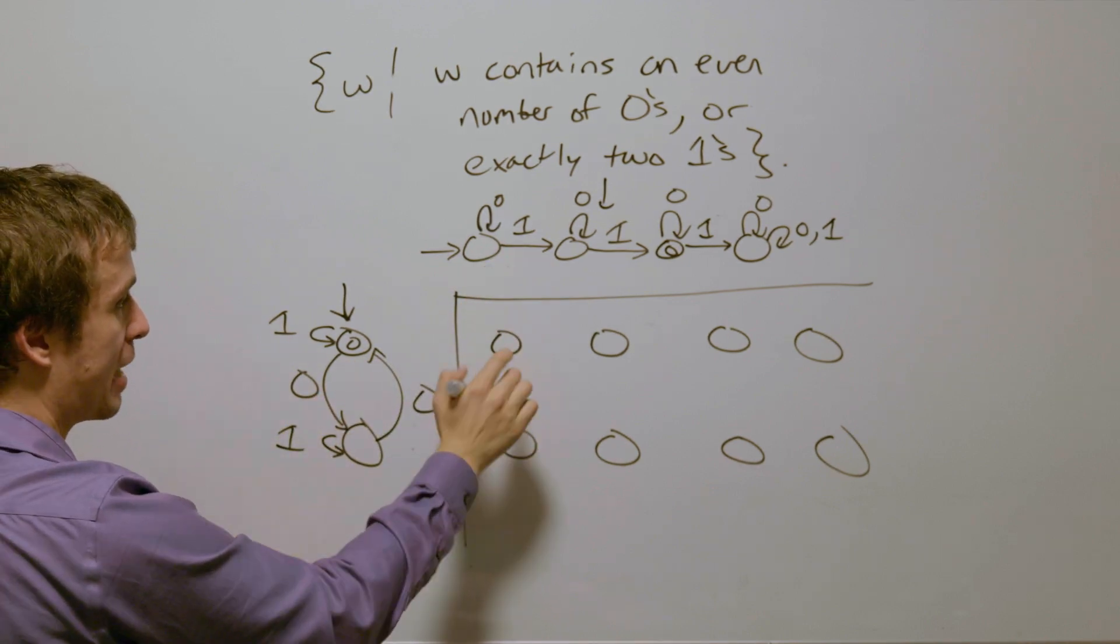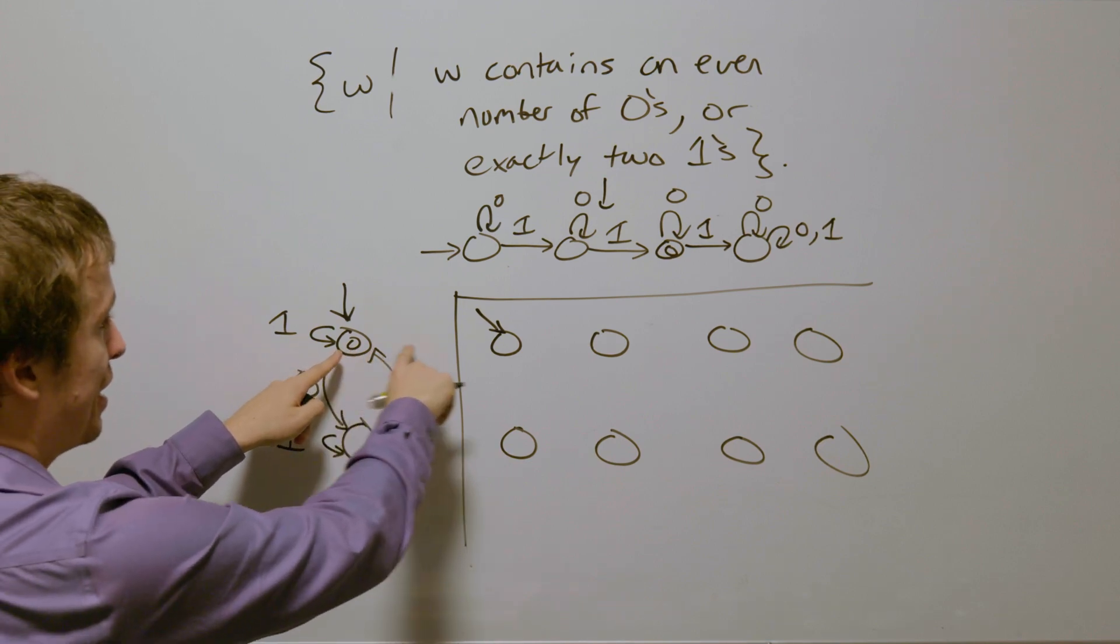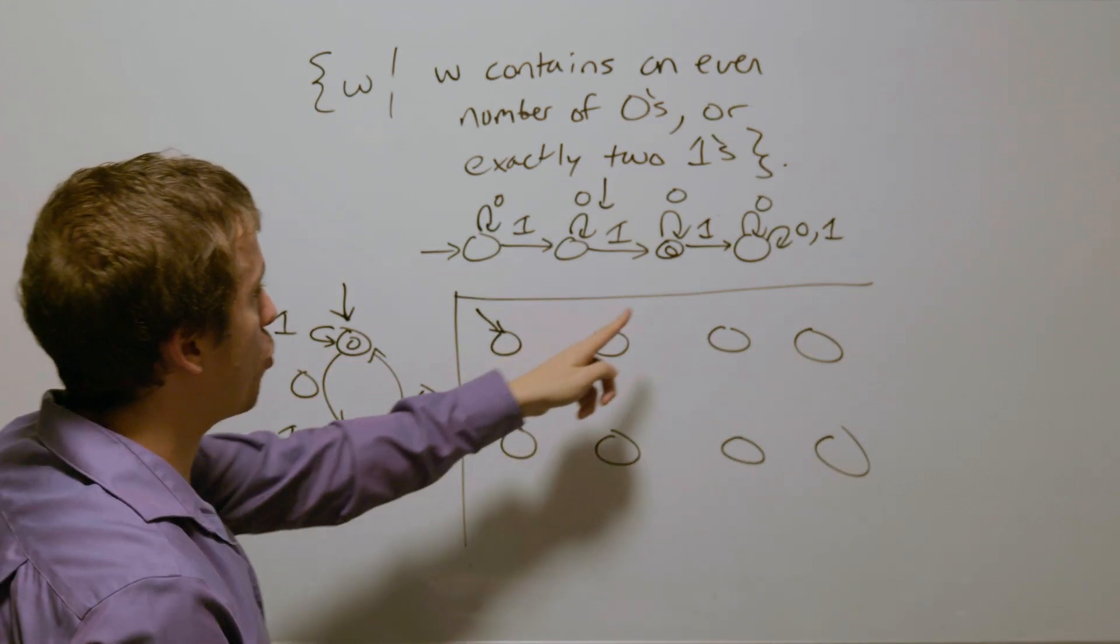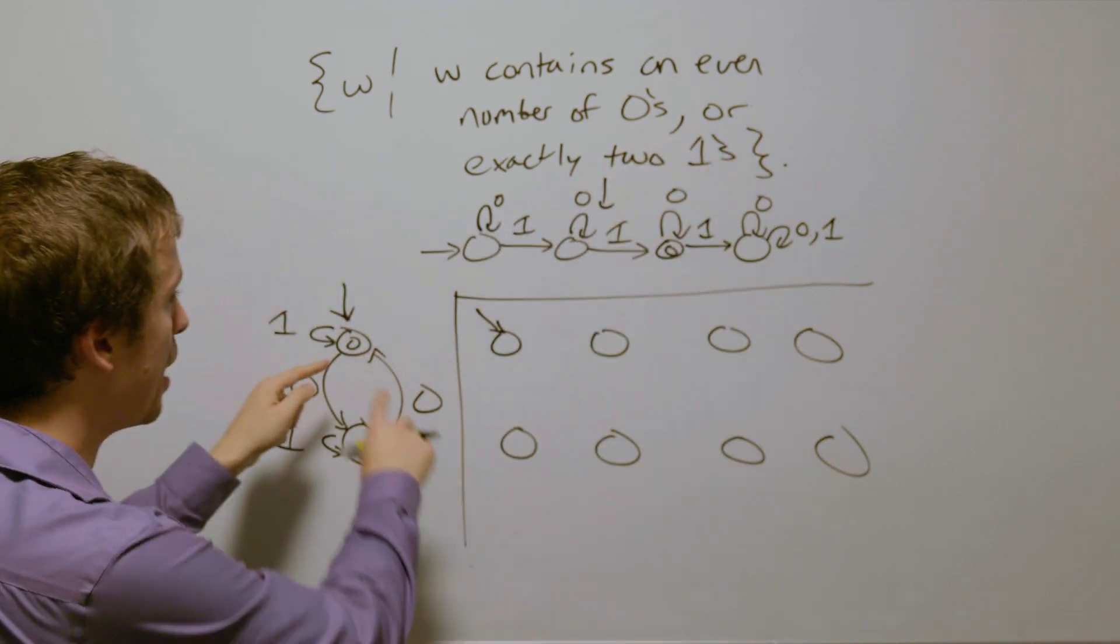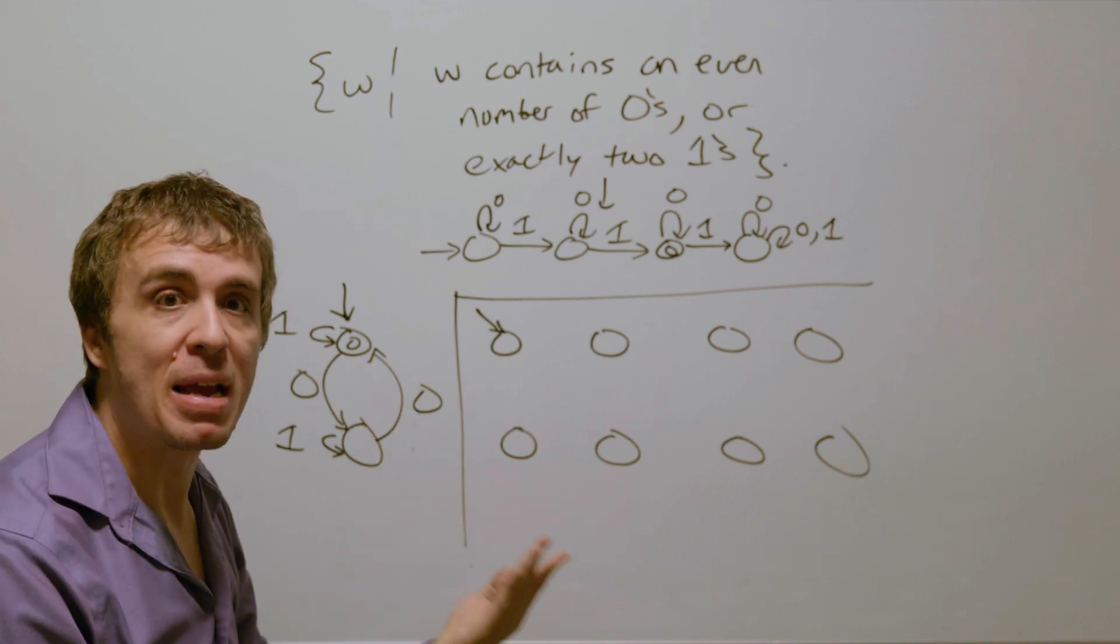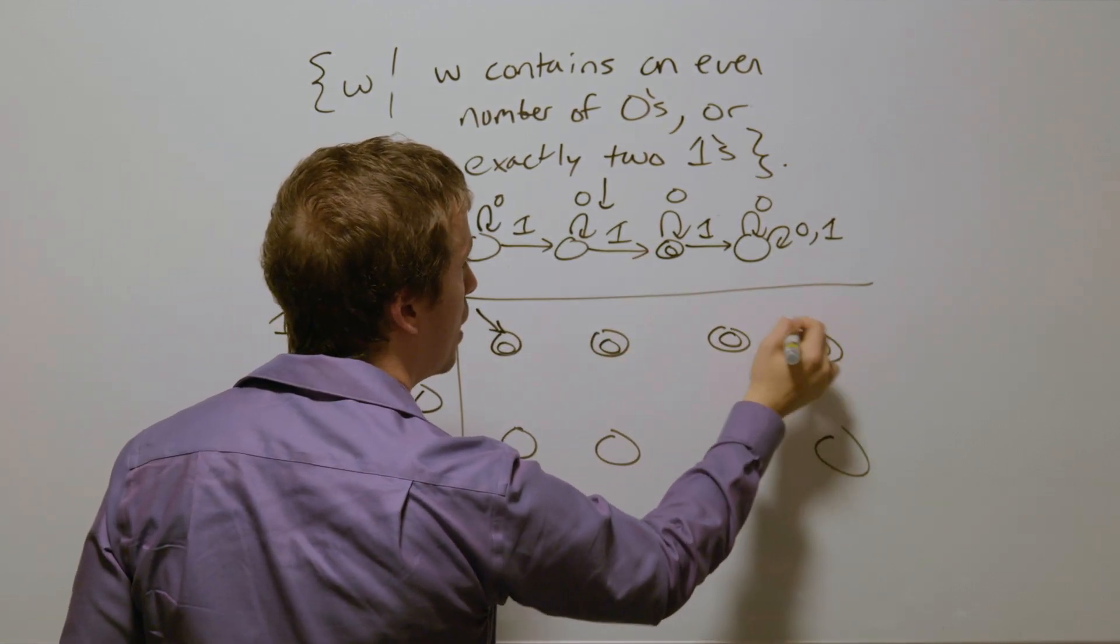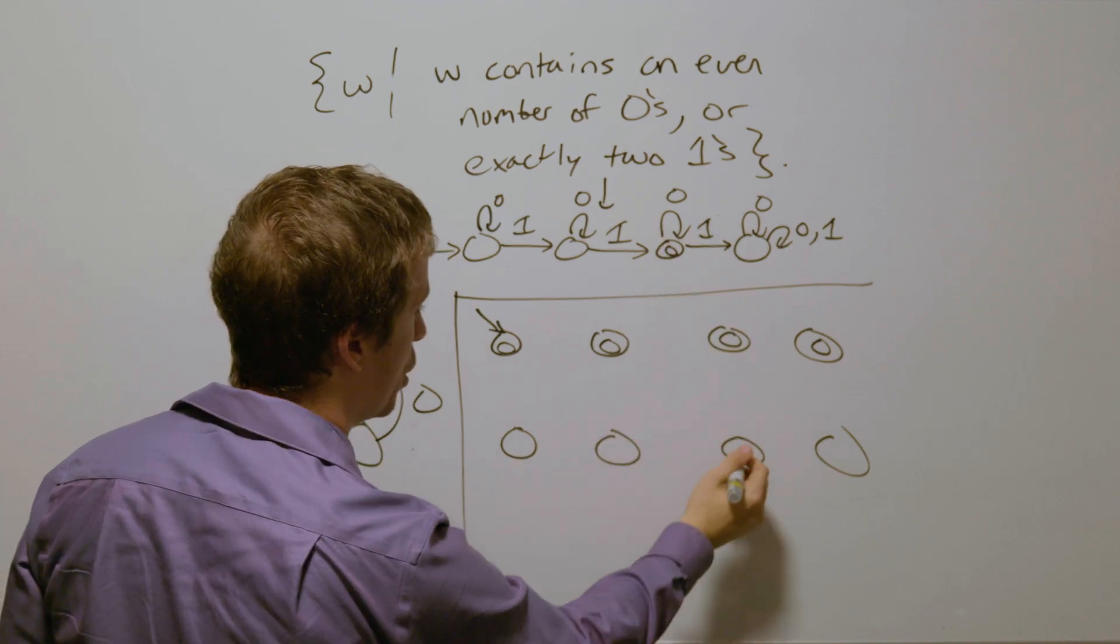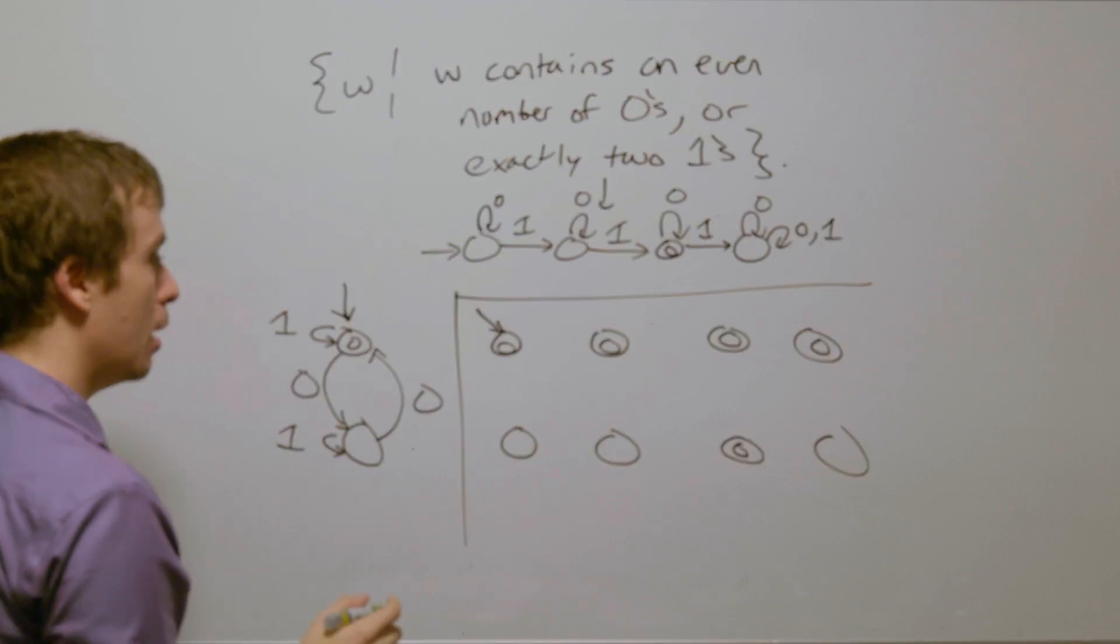and the final states are going to be the ones where it's this entire row, as well as this entire column, because we've got an or here. As long as either one of the originals is accepting, I'm going to make that accepting too, so I'm going to have four states accepting here, and this entire column is also going to be accepted, so five in total in this case.